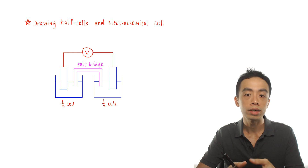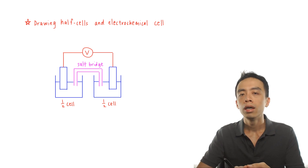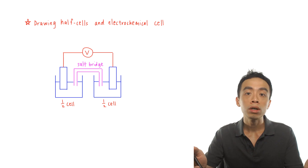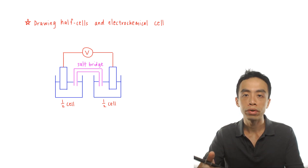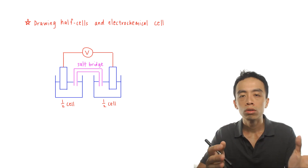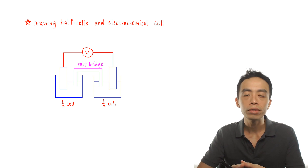Hi everyone, this is Maverick Point, the chemistry guru. In electrochemistry, we are required to draw the detailed setup of an electrochemical cell, and there are three different types of half cells that we need to be familiar with. In this video, we want to go through how to draw the three different types of half cells and to draw an electrochemical cell.